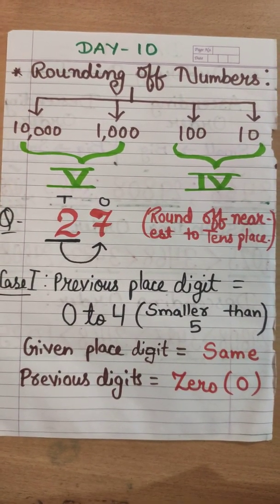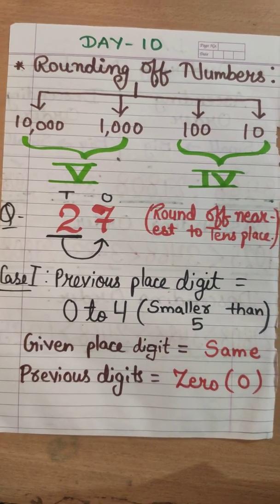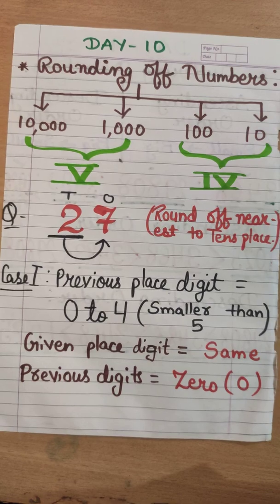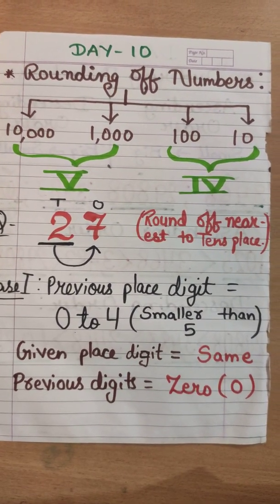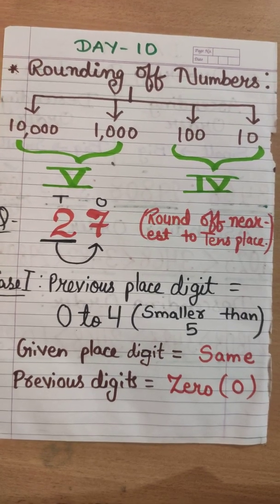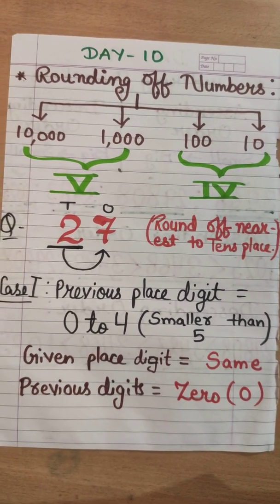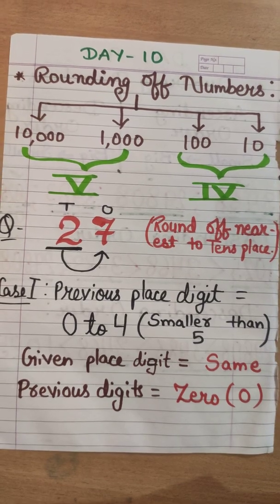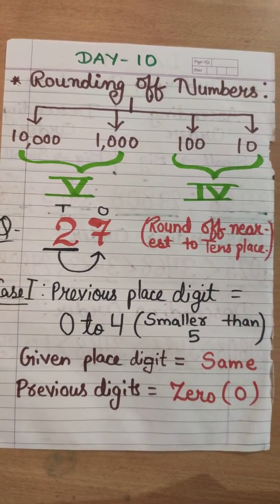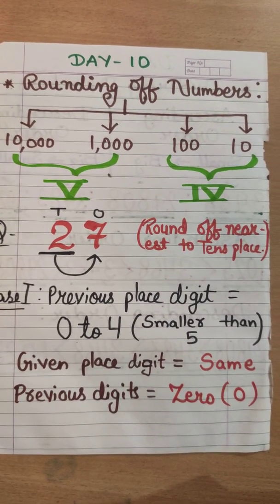Hello students, let's begin with our Day 10 video for Class 5 Mathematics. Today's topic is rounding off numbers. There are four subtopics: tens, hundreds, thousands, and ten thousands. Rounding off to tens and hundreds we have already done in Class 4, and rounding off to nearest thousand and ten thousand we are going to study in Class 5. Let's first revise our Class 4 topics.